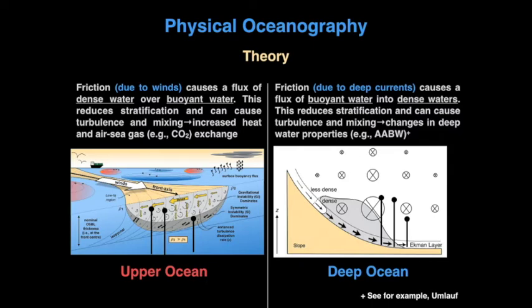This is important because it could change heat exchange and gas exchange, and therefore change ocean circulation and climate. On the right, we can have a similar phenomenon due to deep sea currents flowing along topography, which also has implications for ocean circulation.